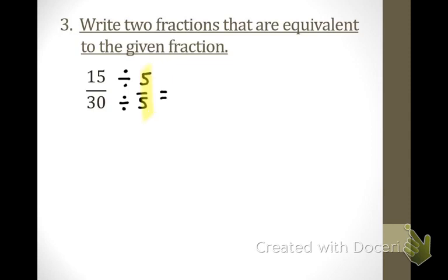Remember, 5 over 5 is the same thing as the number 1, so I'm just dividing by 1. Obviously I'm going to get an equal fraction because it just looks a little different. He says his answer was 3 sixths — very good. Am I finished? No. He gave me one. Who can give me another one?